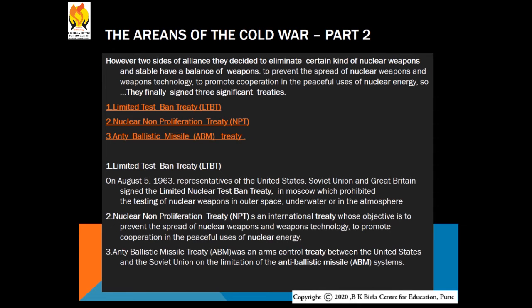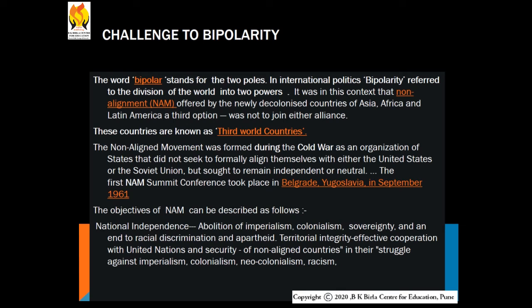The Anti-Ballistic Missile Treaty was an arms control treaty between the United States and the Soviet Union on the limitation of anti-ballistic missile systems. The next point is the challenge to bipolarity.